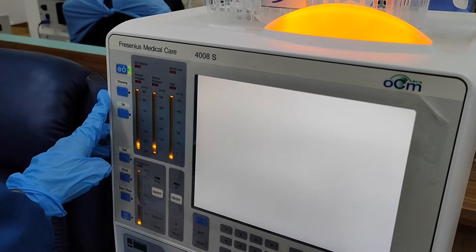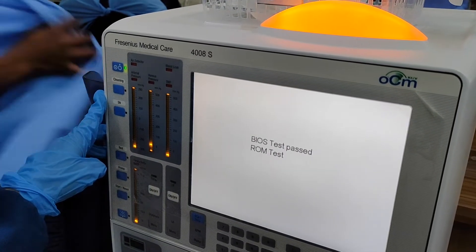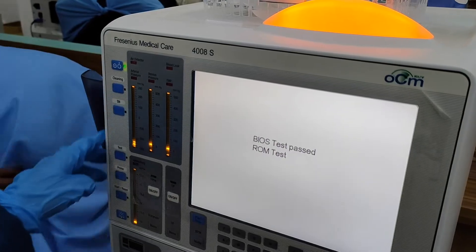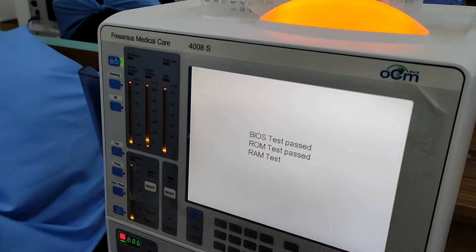Turn on the HD machine. The power button of Fresenius 4008S is located on the upper left corner.